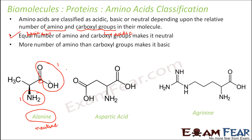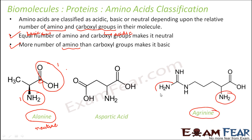If you have more number of amino groups than carboxyl groups — and amino is basic — so more basic groups means it is going to be basic in nature. For example, arginine has multiple amino groups but just one carboxyl group, so it is basic because amino is basic.